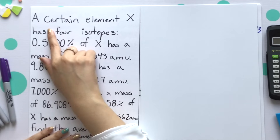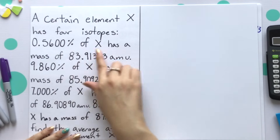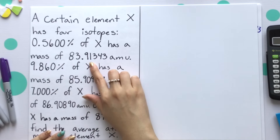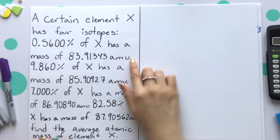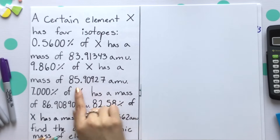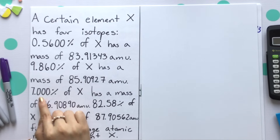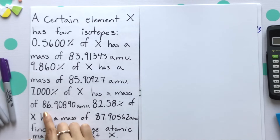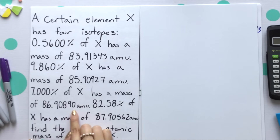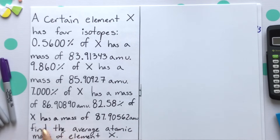Let's go into our first example talking about percent abundance. A certain element X has four isotopes. 0.5600 percent of X has a mass of 83.91343 AMU. The second isotope, 9.860 percent of X, has a mass of 85.90927 AMU. Our third isotope, 7.000 percent of X, has a mass of 86.90890 AMU. And our last isotope, 82.58 percent of X, has a mass of 87.90562 AMU.